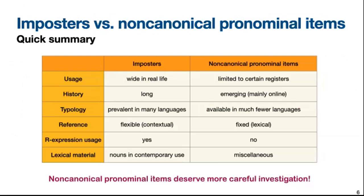Impostors and non-canonical pronominal items differ in quite a few aspects. Impostors have been widely used for a long time, they are prevalent in many languages, they have flexible reference and common R-expression usage, and they are mainly recycled from nouns that are in contemporary usage. By comparison, non-canonical pronominal items are an emerging phenomenon limited to certain registers, mainly on the internet. They are typologically much less prevalent, they have fixed reference and no common R-expression usage, and they have miscellaneous lexical sources. Given these non-canonical characteristics, we think this new type of pronominal item deserves more careful investigation, which is what we do in our study.